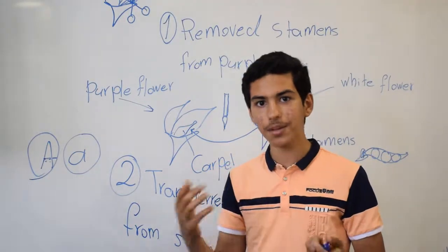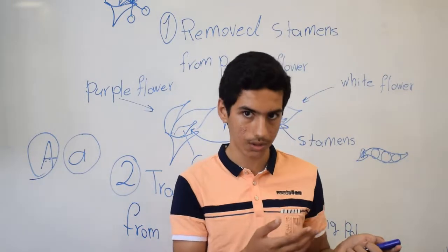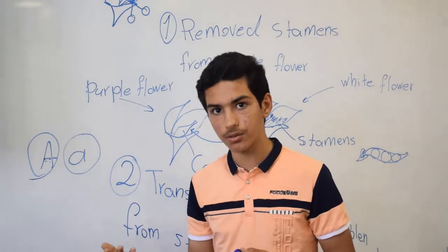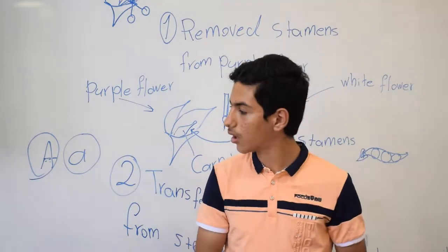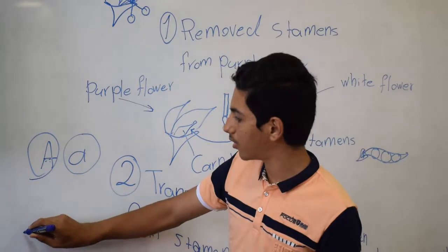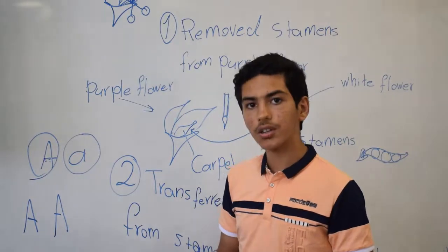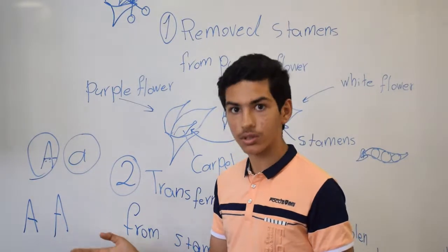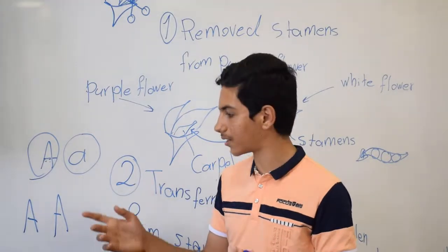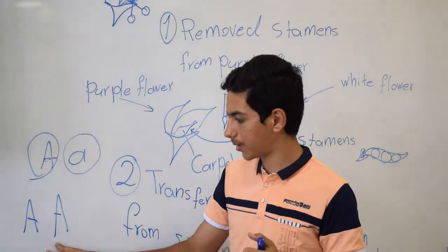We have two types of genotypes in pea plants: homozygous and heterozygous. For example, if a pea plant has the allele double capital A, we know that capital A, or the dominant allele, does not have any problem.